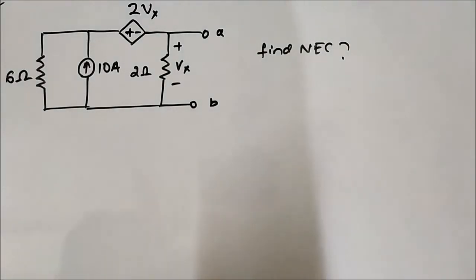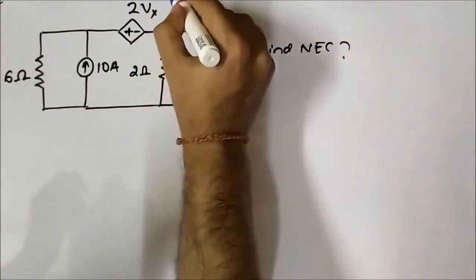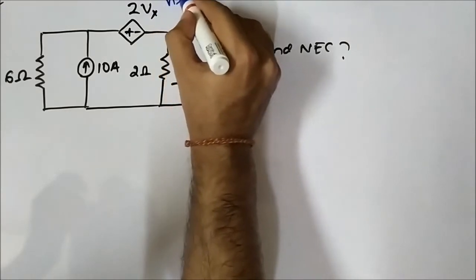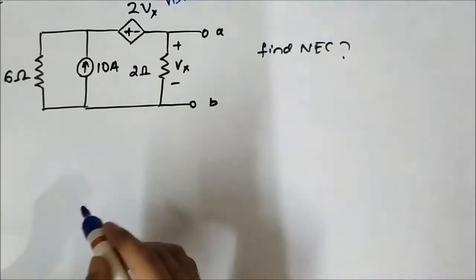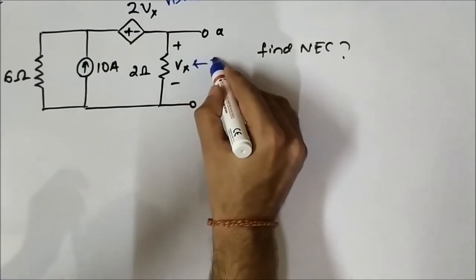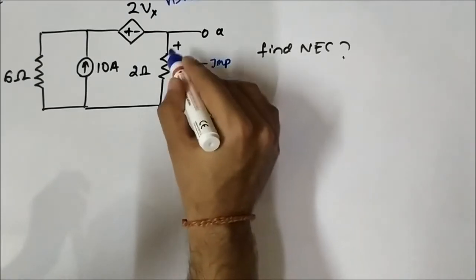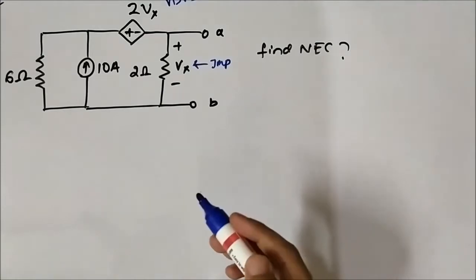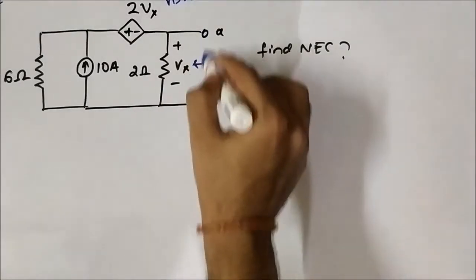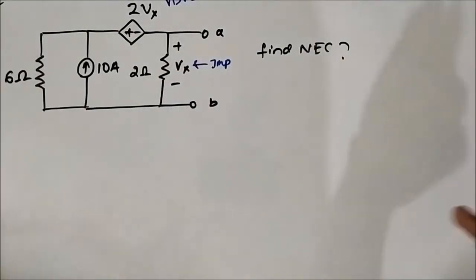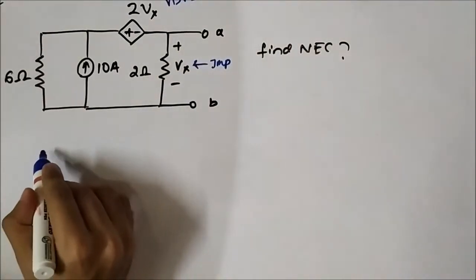Here, this is the dependent source. It is a voltage dependent voltage source, and this is the important variable here — the voltage across this 2 ohm resistor, which we call Vx. So, the first step is we have to find the Norton current. We have to short circuit terminals A and B and find the current flowing through the shorted path. So, let us redraw the circuit.